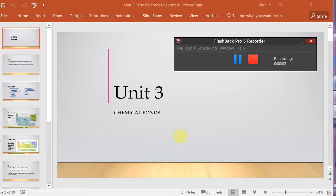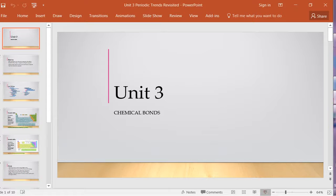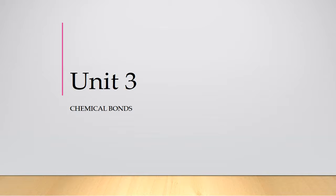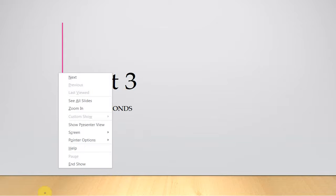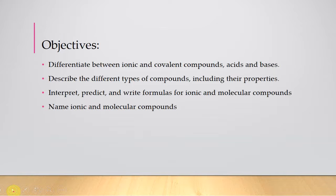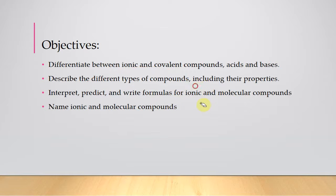This is the first video in the Unit 3 module. We are going to be moving away from the basics of the atom and getting into how those atoms bond and form compounds. For this unit we're going to be looking at differentiating between ionic and covalent compounds, specifically we're also going to look at acids and bases, and then we're going to look at what types of compounds we'll deal with for the rest of the semester, as well as their properties.